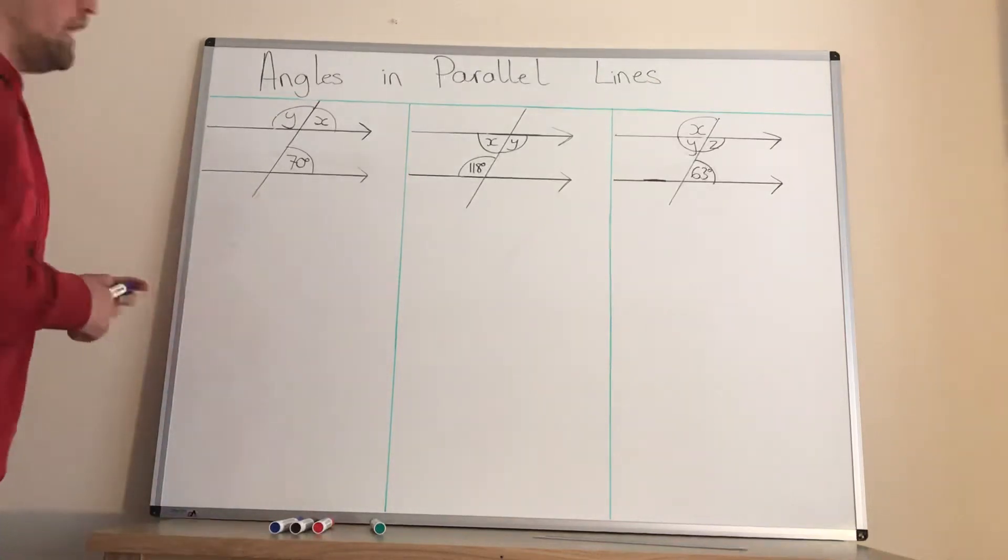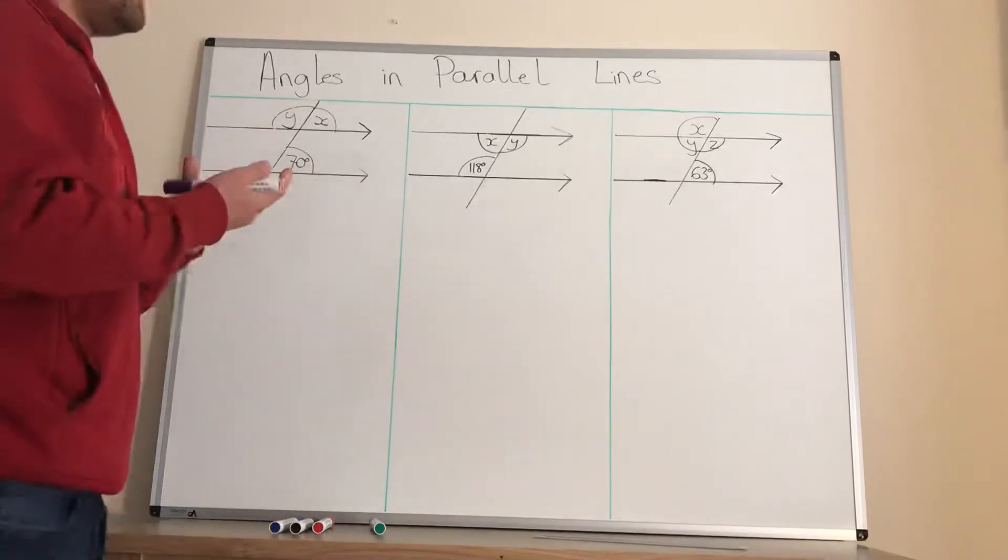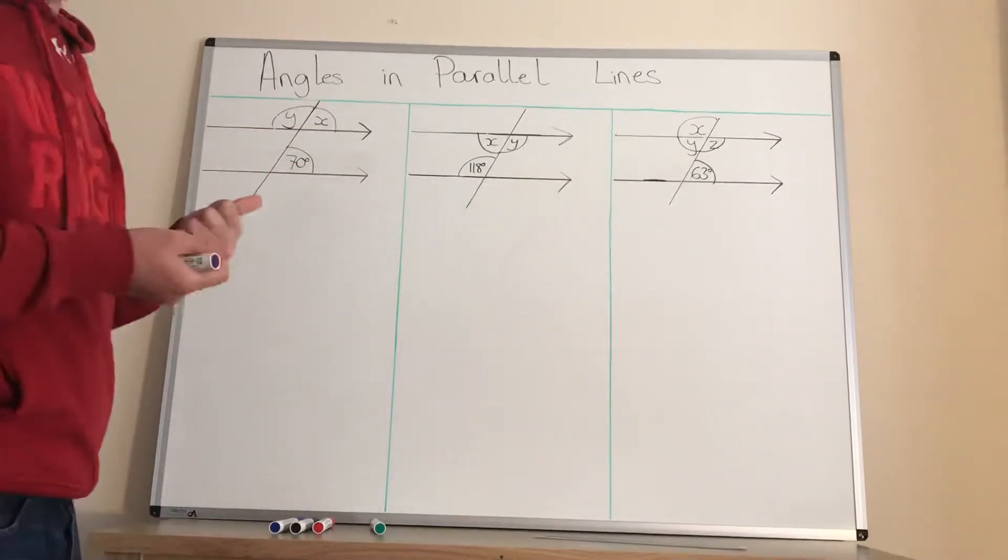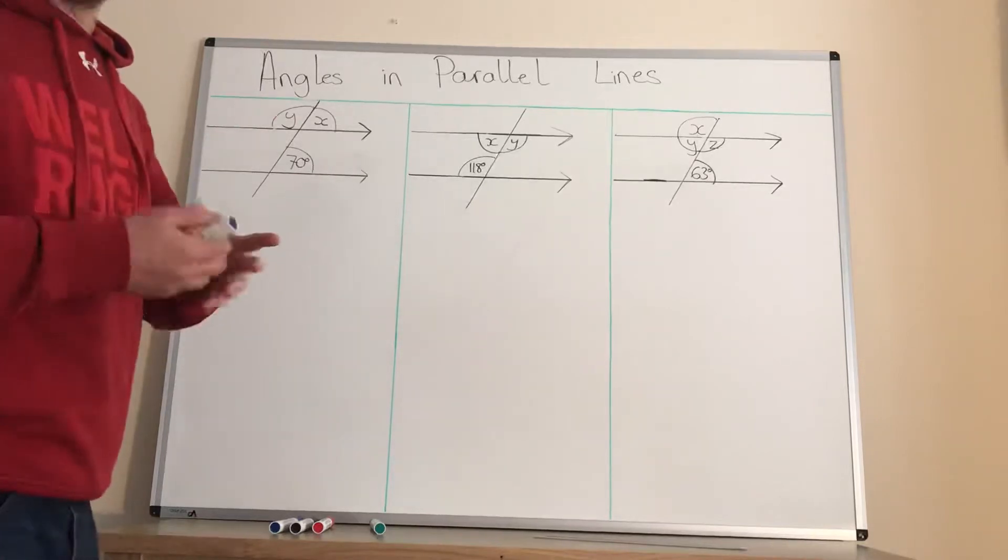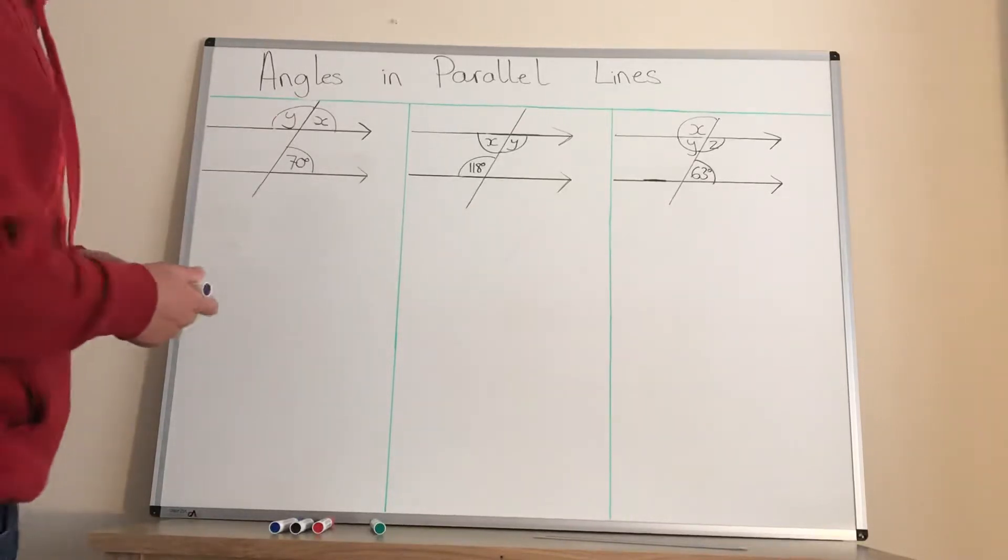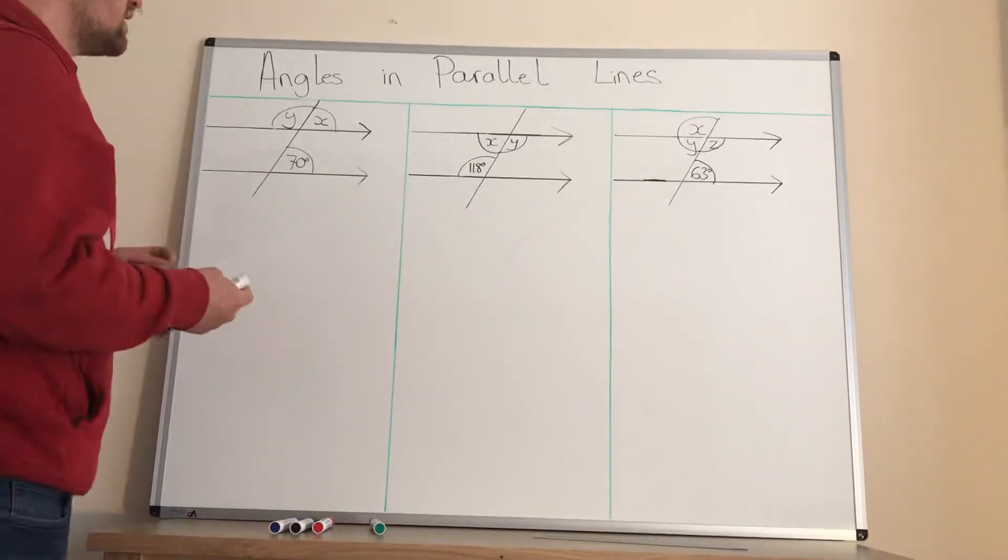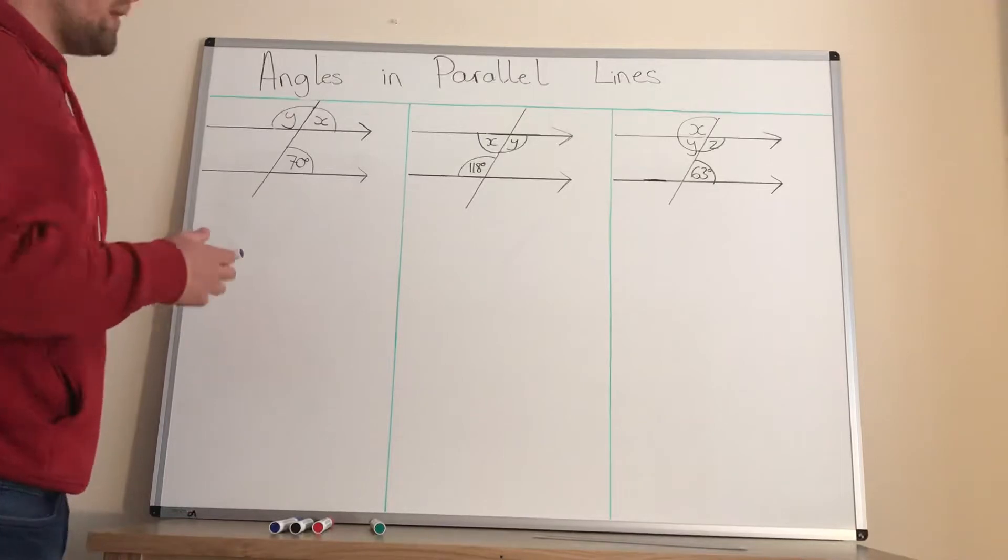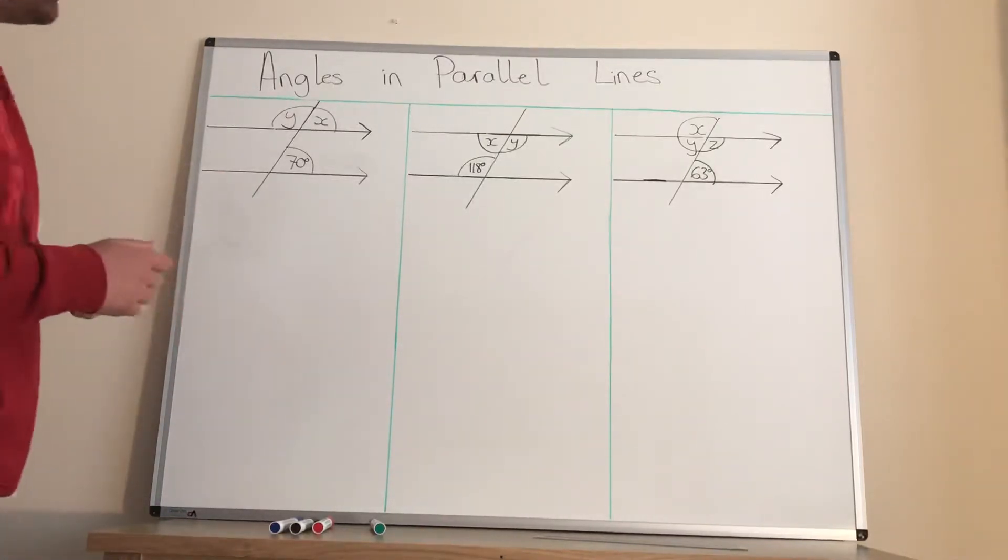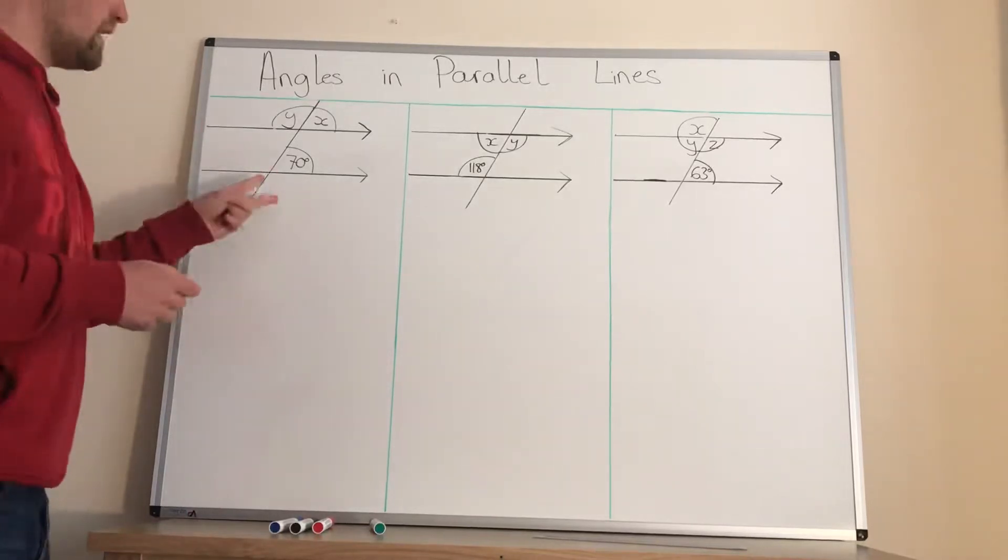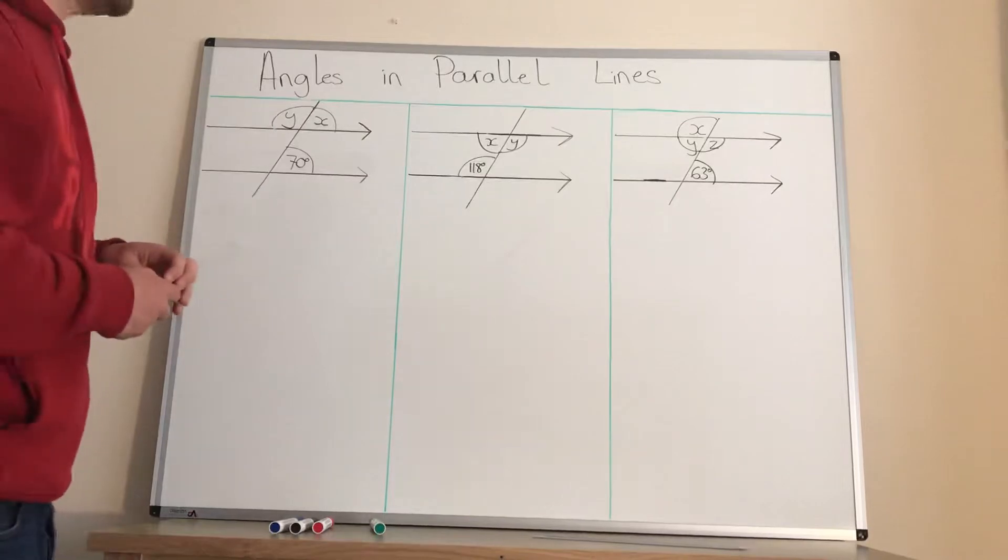Welcome back to another maths lesson. Last lesson we looked at angles and parallel lines, but all we did was find out the three names for the different angles and then looked at finding one angle in a set of parallel lines. If you're not sure about that still, you need to go back and have a look at it. Today we're going to move on to finding two missing angles in a set of parallel lines, and then we'll have a look at finding three angles in a set of parallel lines as well.